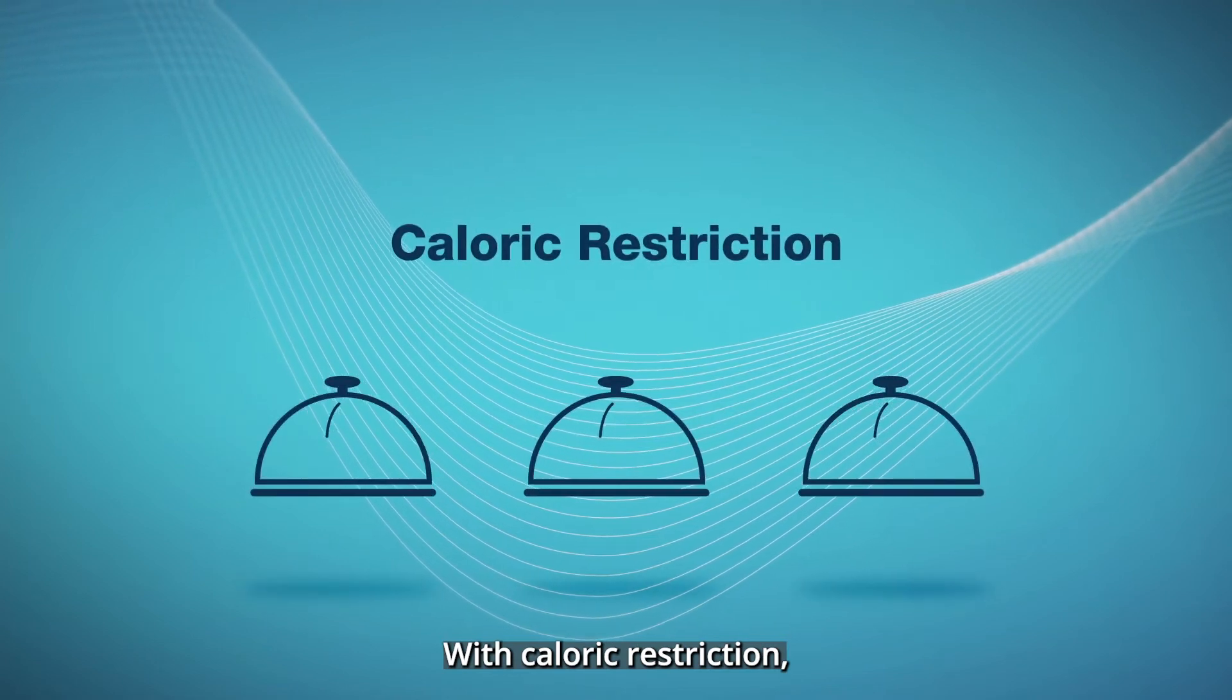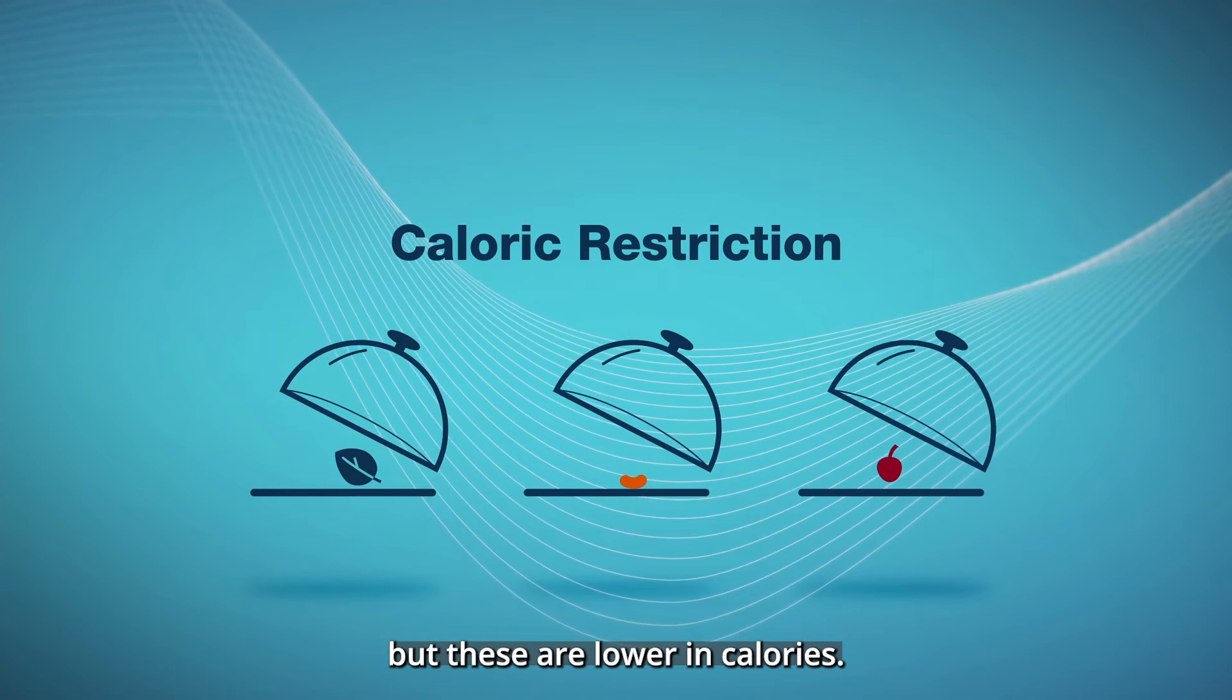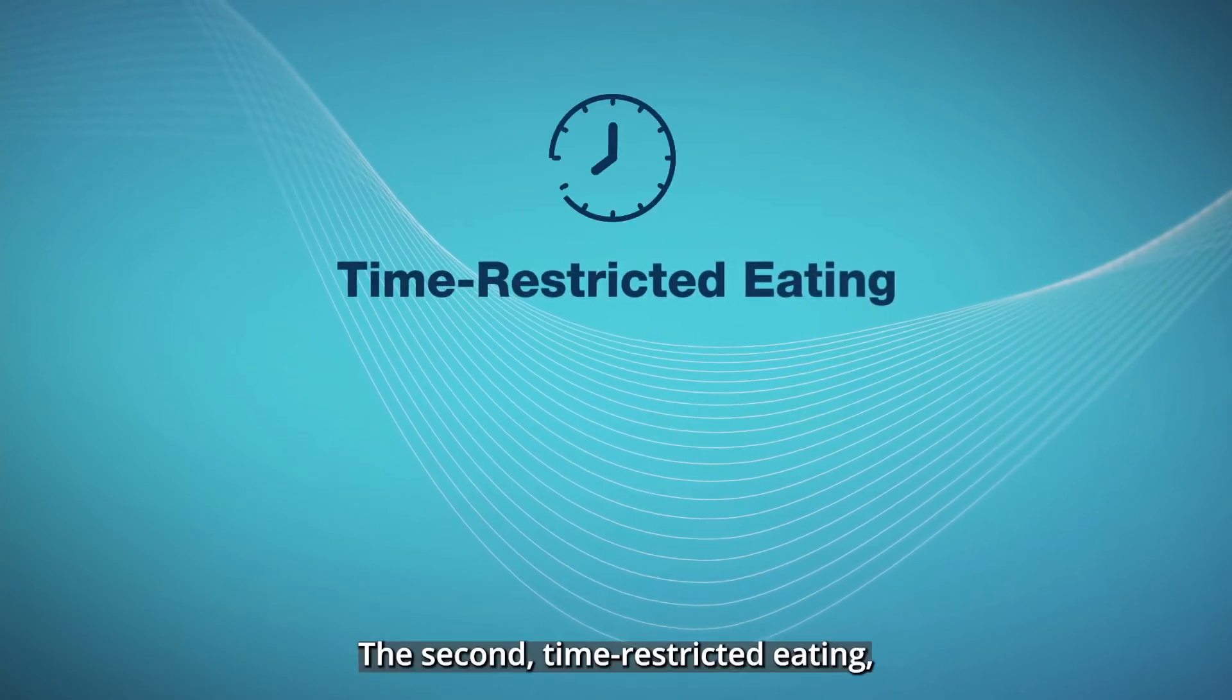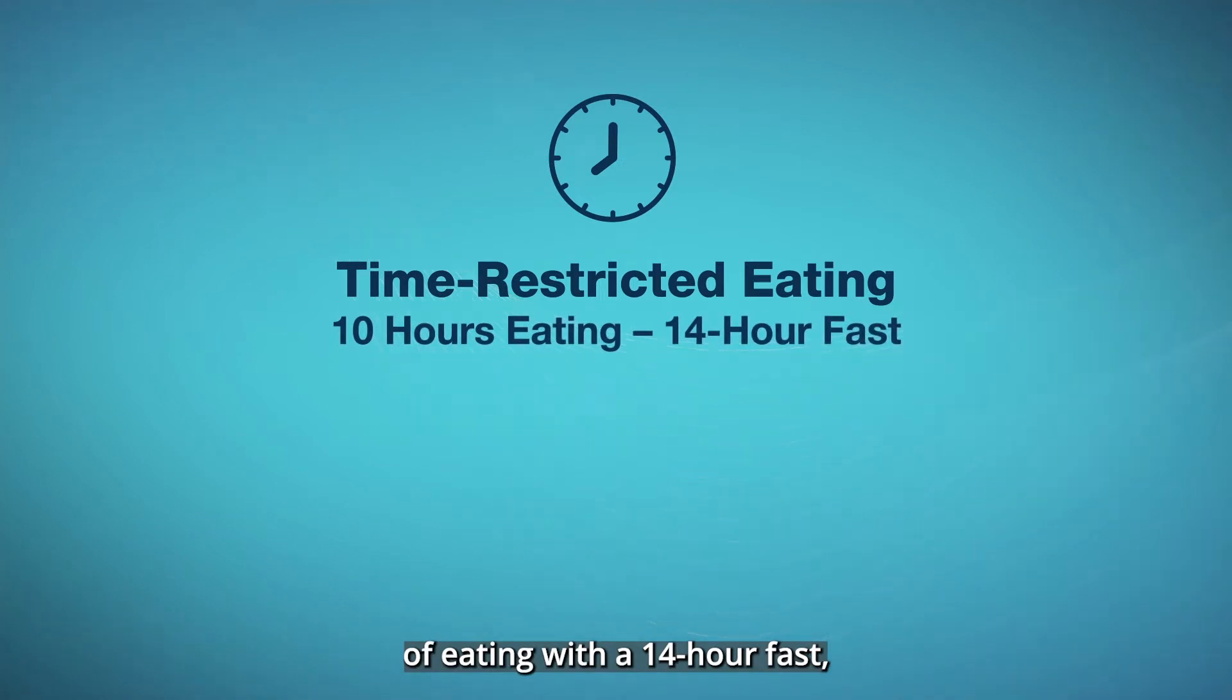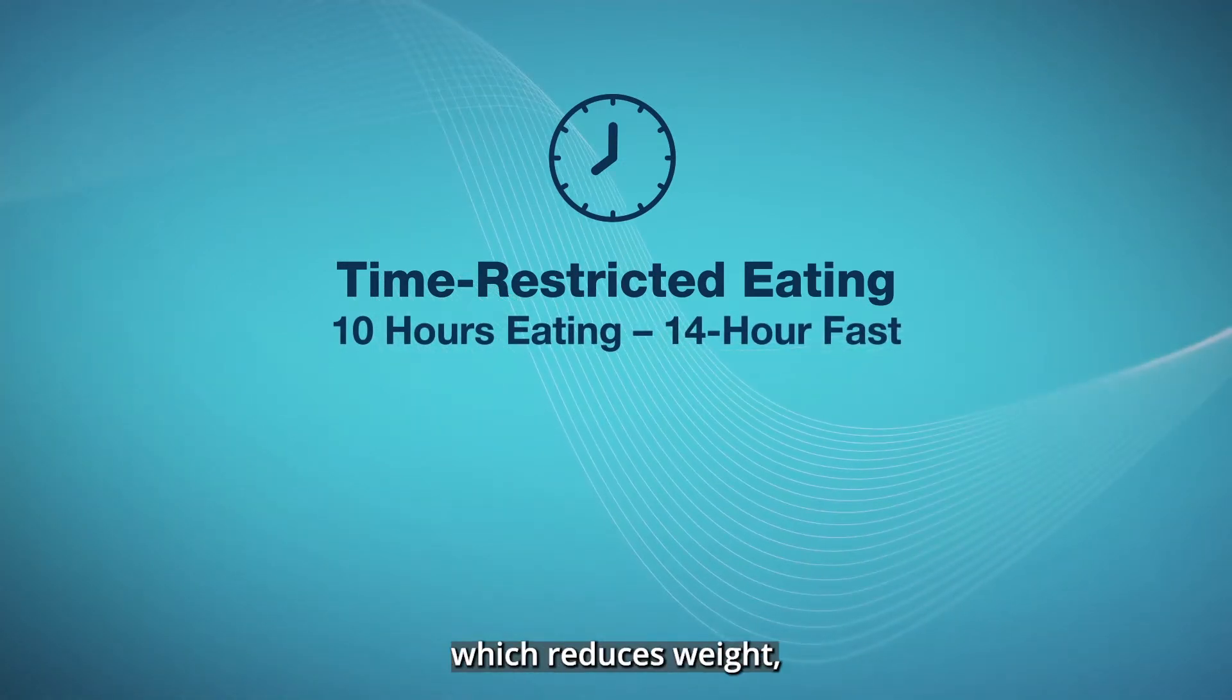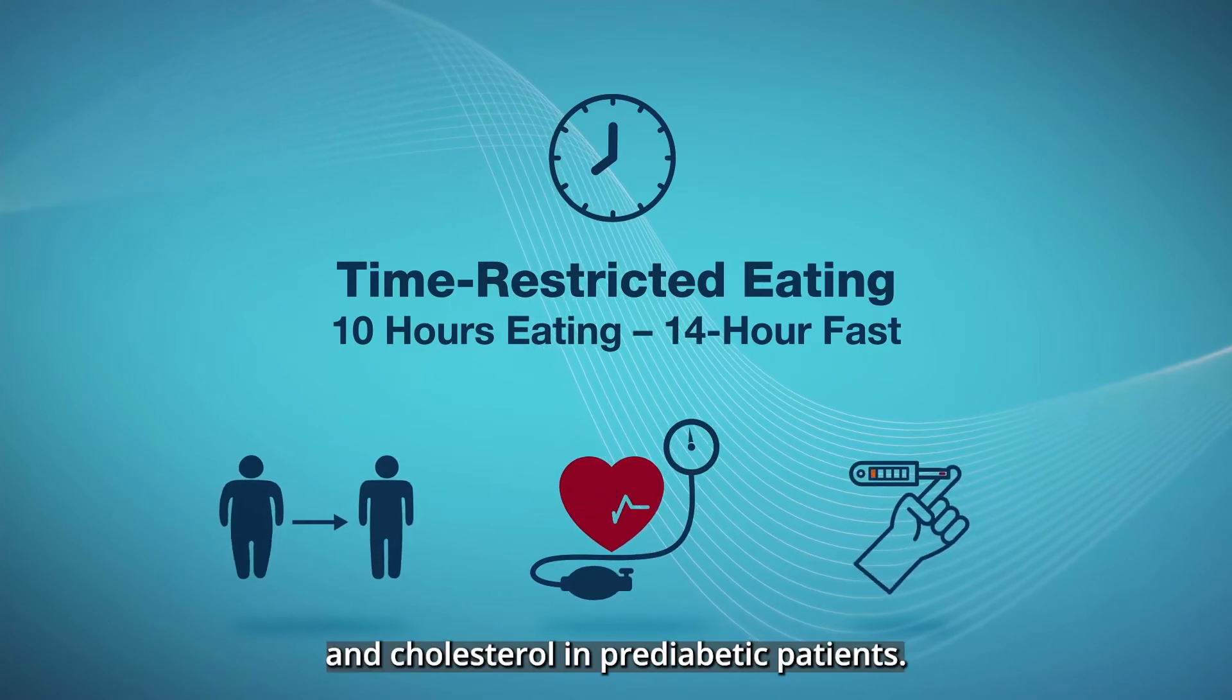With caloric restriction, you have three meals a day, but these are lower in calories. The second, time-restricted eating, allows 10 hours of eating with a 14-hour fast, which reduces weight, blood pressure, and cholesterol in pre-diabetic patients.